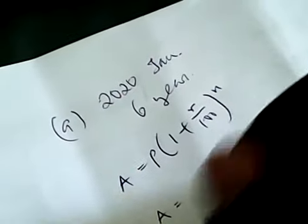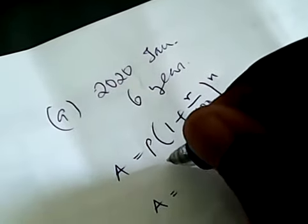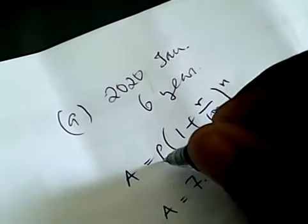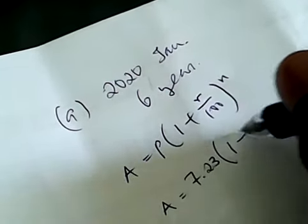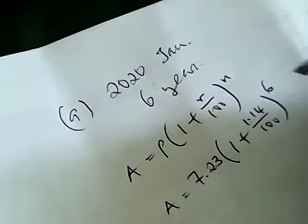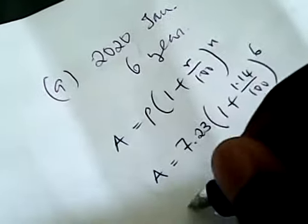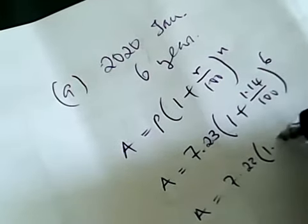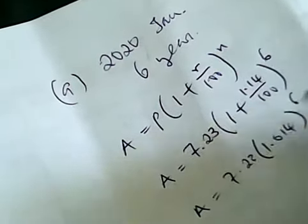So we are looking for A to find the population growth. So the population at first was 7.23. This becomes the principal. Then 1 plus, the rate is 1.14 over 100, and the period is 6. Then you do 7.23 times 1.014 to the power of 6.